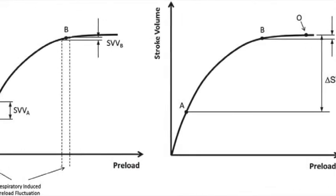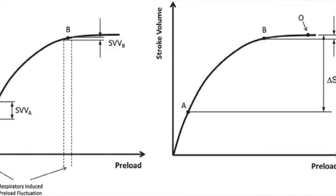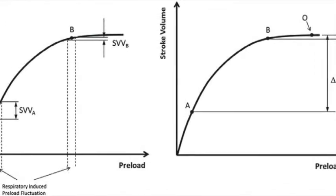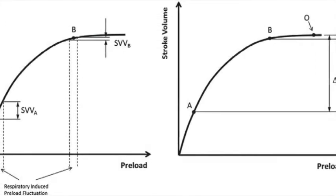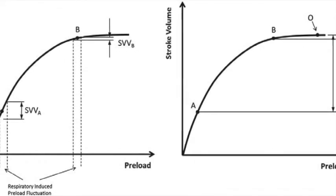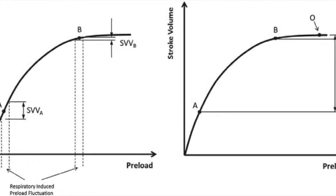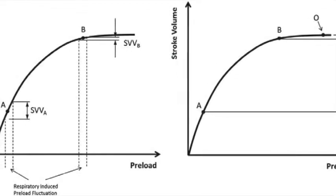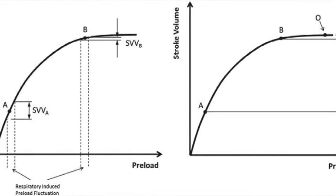The initial response to a positive pressure breath is that blood is squeezed from the lungs into the left atrium. Think of wringing out a sponge. You squeeze the sponge and water flows out. That's what the ventilator does to the lungs. The blood flows into the left atrium, and for a beat or two, the preload is increased. Stroke volume and blood pressure acutely rise.